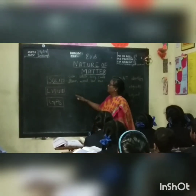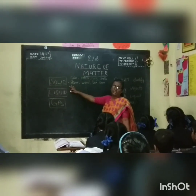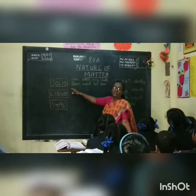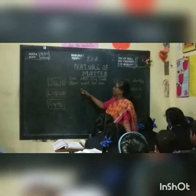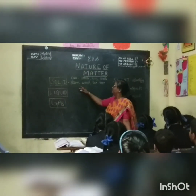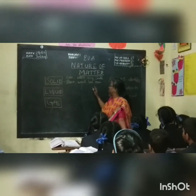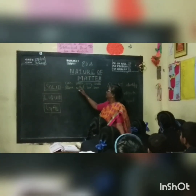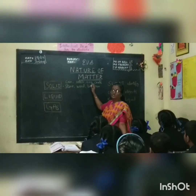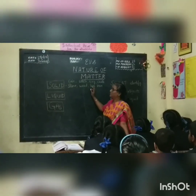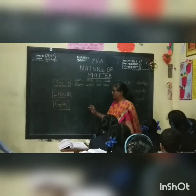Can you give me some examples for solid? Stone, wood, moss, iron, toy, bottle, bag, chalk. All these are solid.